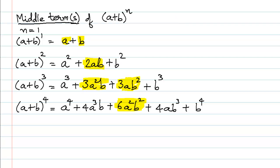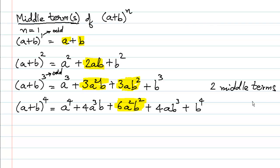We can easily conclude that when n is an odd number — as seen with n=1 and n=3 — there are two middle terms. However, when n is an even number — as with n=2 and n=4 — there is just one middle term.